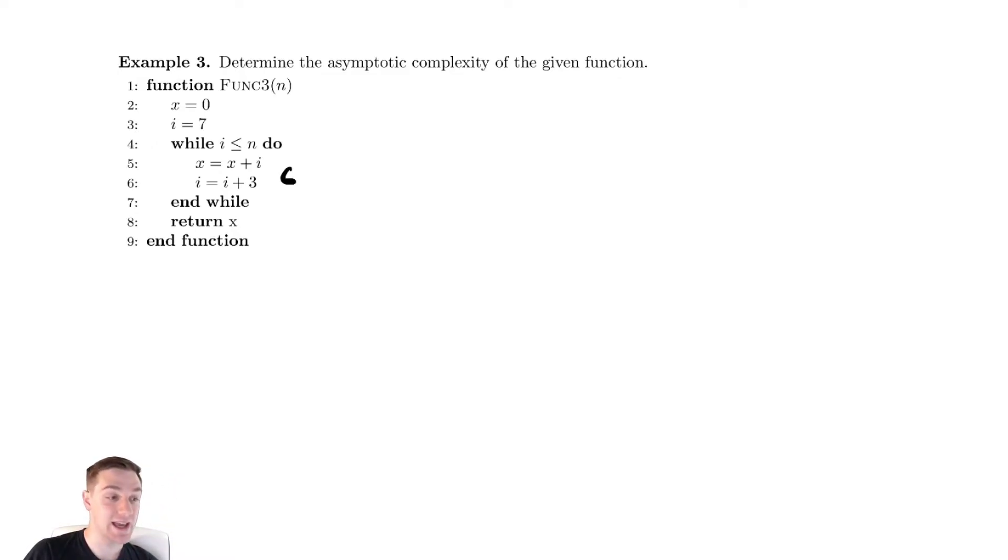And we're going to create a table to try and understand what happens to the value of i, the value that's updated inside of the while loop, as we advance through the loop. So I'm going to keep check of the iteration and the value of the variable in some table over here. At the start, before I've done any iterations, i is equal to 7, and then I'm going to continually add 3 to that.